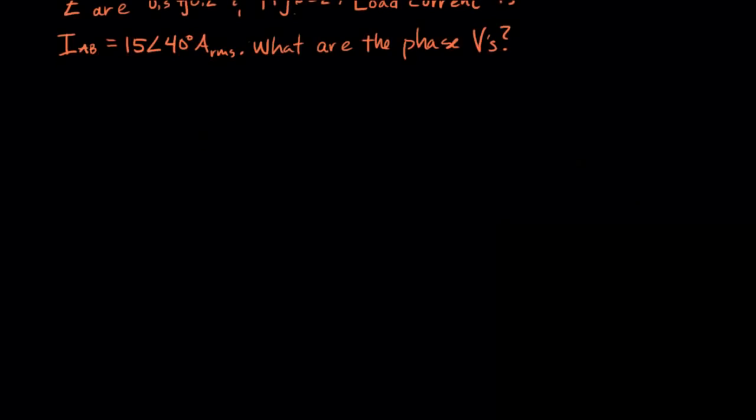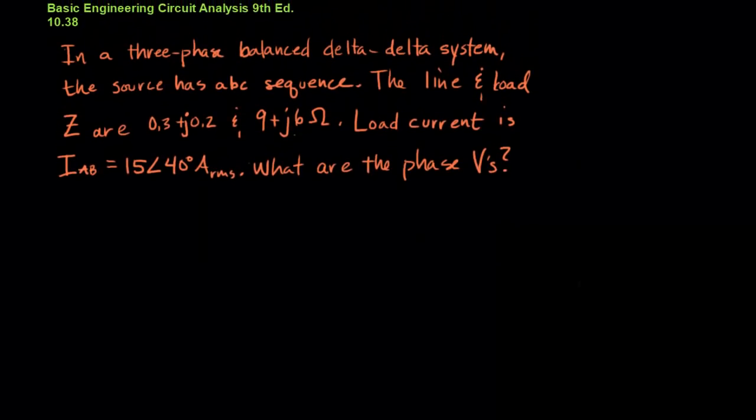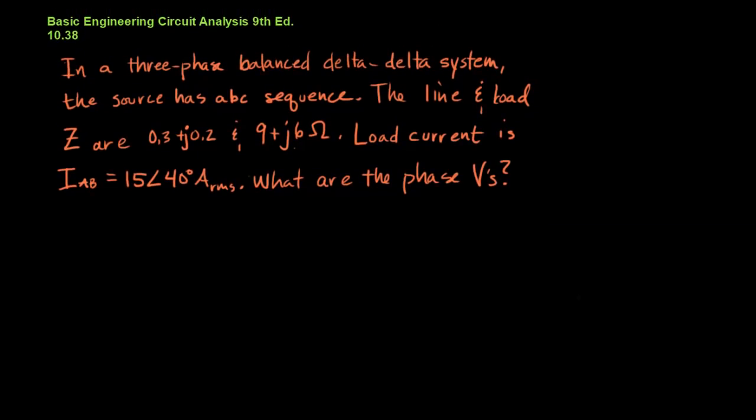So here's the problem. Let's move through it and try and design a circuit that emulates this problem. We have a three-phase balanced delta-to-delta system that has an A-B-C sequence. What's that telling us? Delta-to-delta.